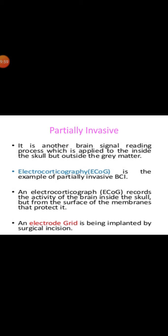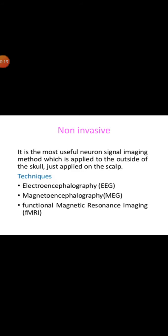Partially invasive is another brain signal reading process which is applied to the inside the skull but outside the gray matter. Electrocorticograph is the example of partially invasive BCI. The electrocorticograph records the activity of the brain inside the skull but from the surface of the membranes that protect it. Electrode grid is implanted by surgical incision.